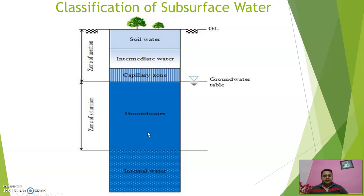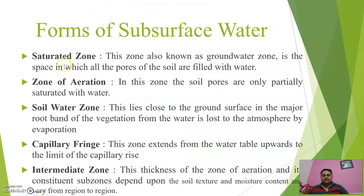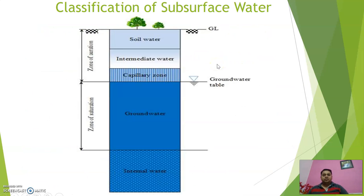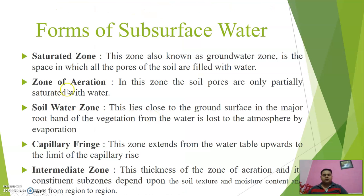Now we see the saturated zone. This zone, also known as the groundwater zone, is the space in which all the pores of the soil are filled with water. As you see in the diagram, in this groundwater zone all the pores are filled with water. That is the zone of saturation — saturation means completely filled with water.